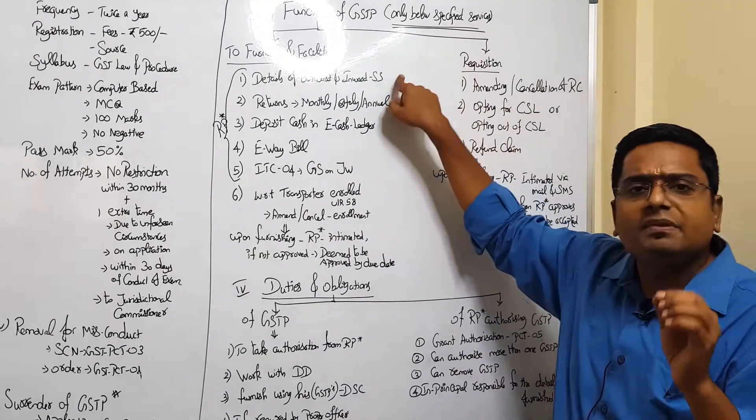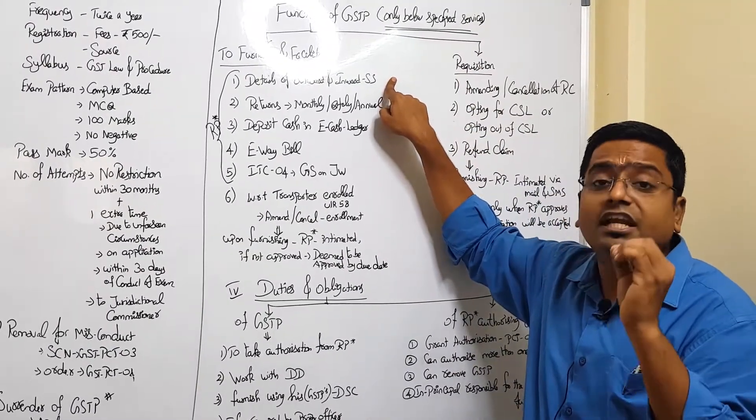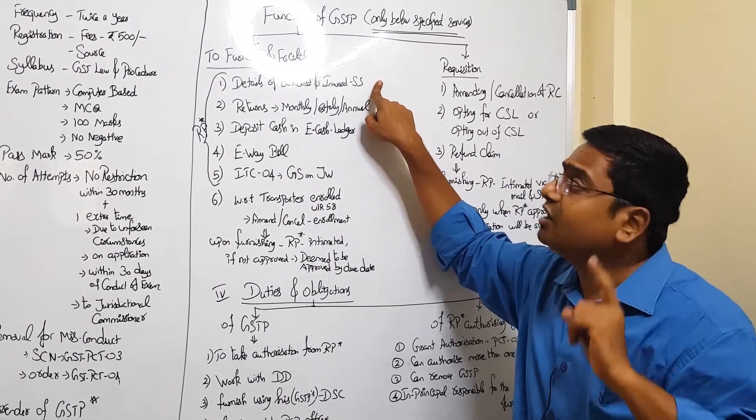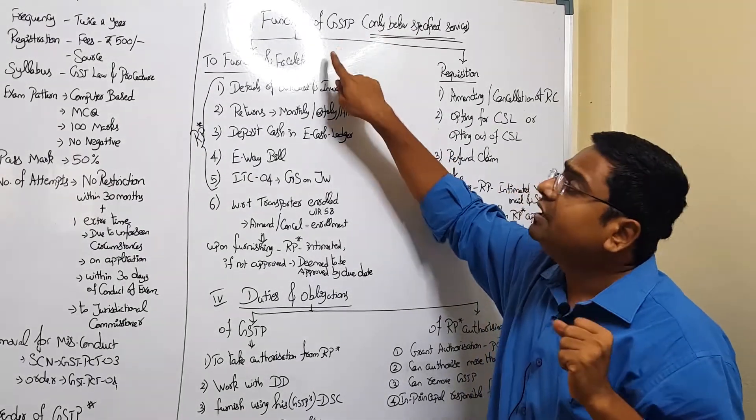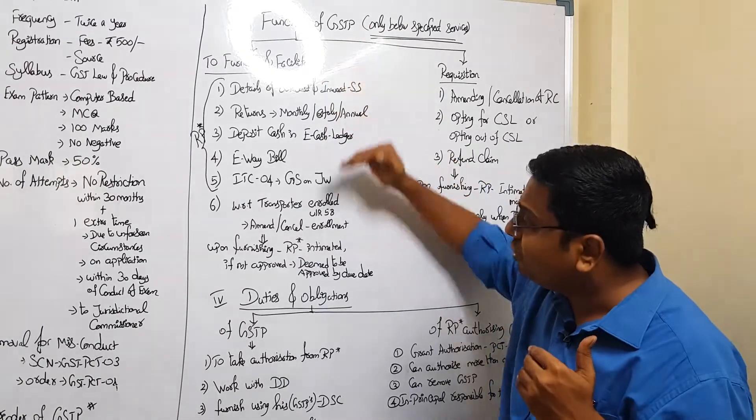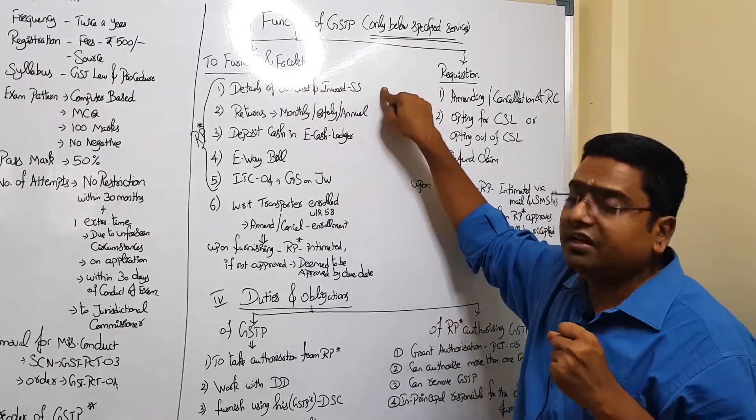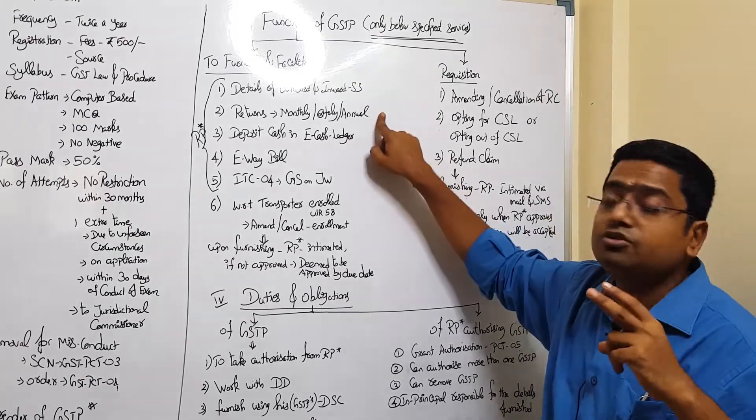During this life cycle, a GSTP will do what? He will be doing the following functions for a registered person if authorized. For doing all these functions, the GSTP has to be authorized by a registered person in PCT-05. What are the functions a registered person can be assisted by this GSTP? He can be assisted in doing the following compliance activity. Number one: to furnish the details of outward and inward supply details.